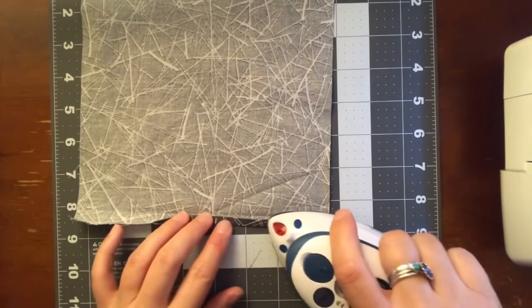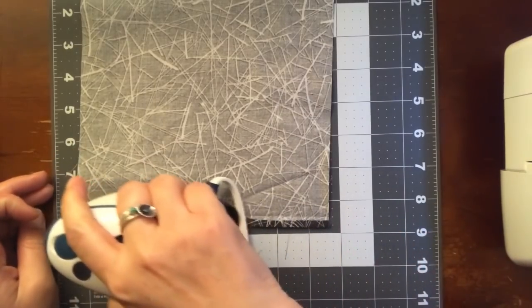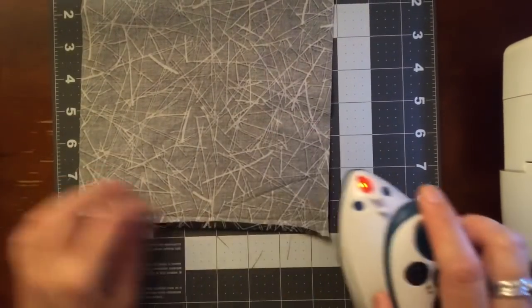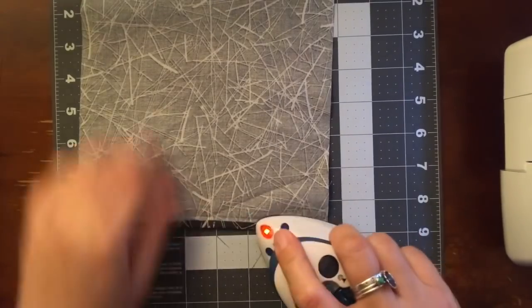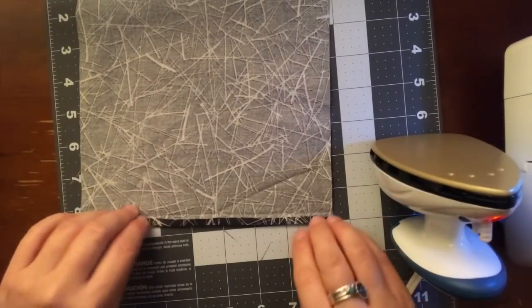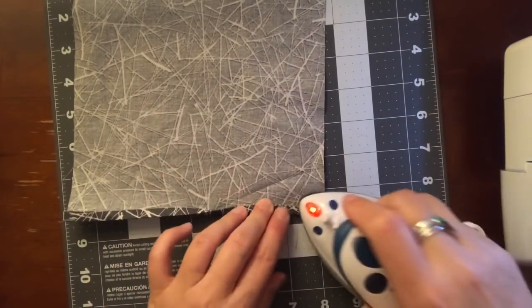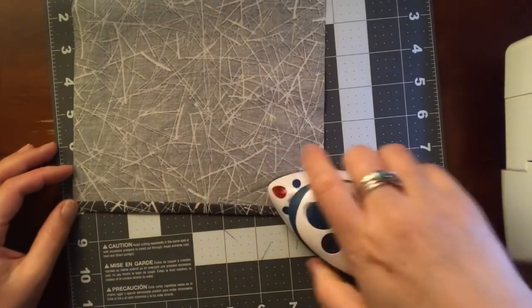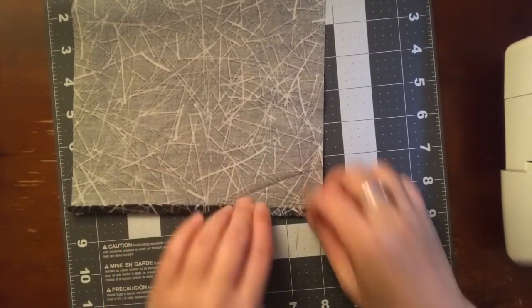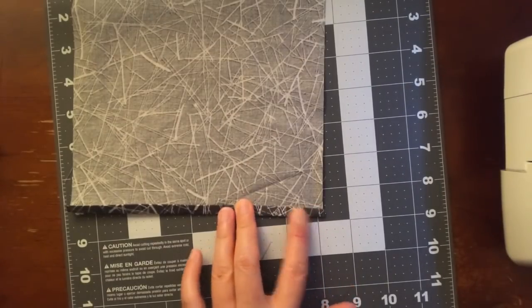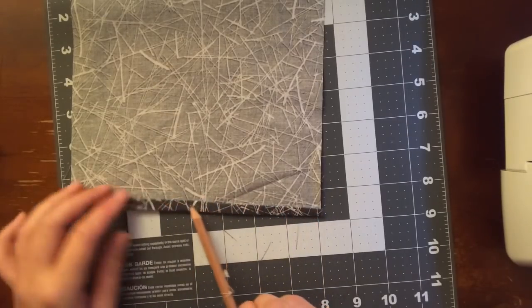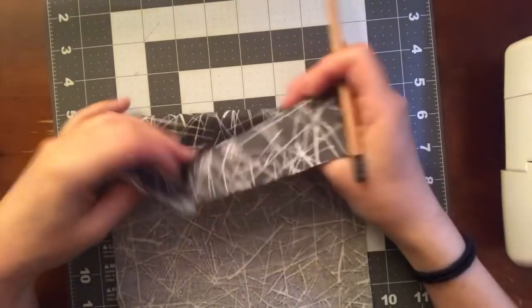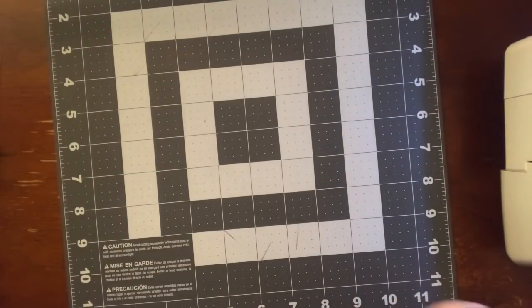You want to roll a quarter inch from the edge and just iron it to press it. My iron is set at pretty low temperature, so I can directly iron on this cutting board. You do that, and then you roll it again another quarter inch and press it. Then we'll go to the sewing machine and top stitch along this edge about 1/8 of an inch so you have a nice hem. Do the same thing for the other side.